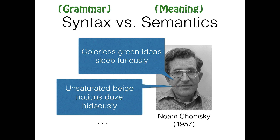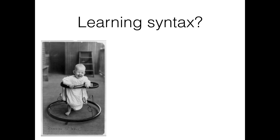So syntax and semantics — meaning and grammar — are two different things. How do children learn to combine words together? This is the amazing part. While children don't immediately speak in complete sentences, it's only a matter of months or at most a year or two between when they start speaking at all and when they are combining words together in syntactically correct ways.